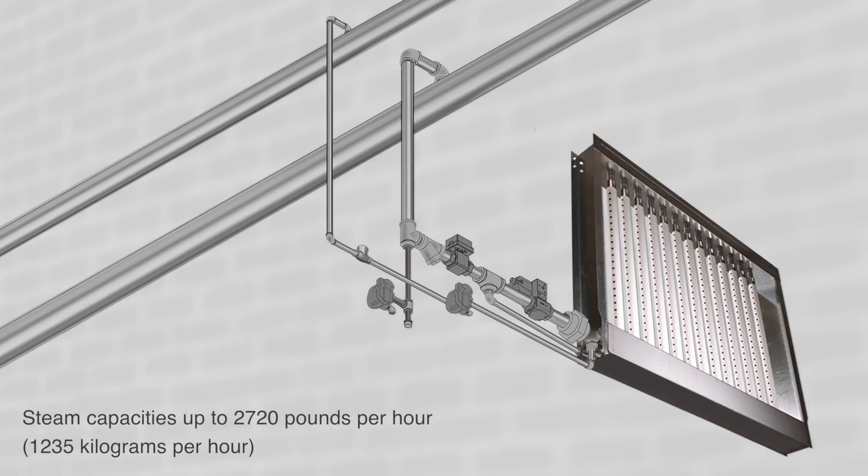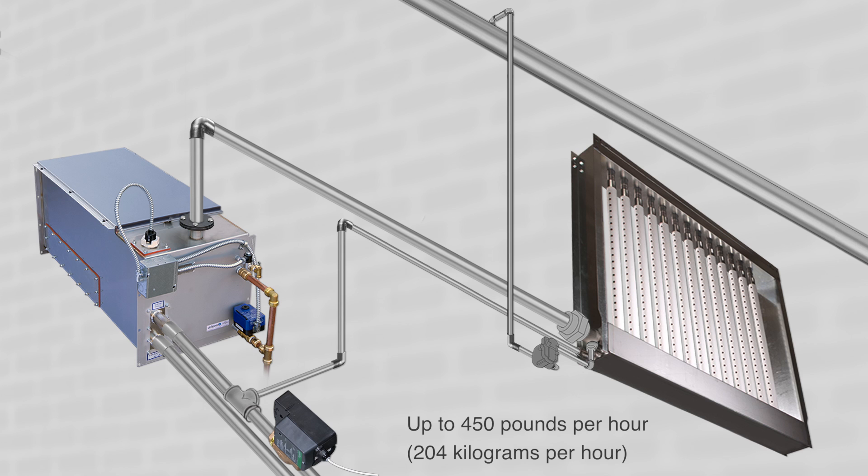Ultrasorb XV can disperse over 2,700 pounds per hour of pressurized boiler steam, or up to 450 pounds per hour of chemical-free steam generated by our STS humidifier.